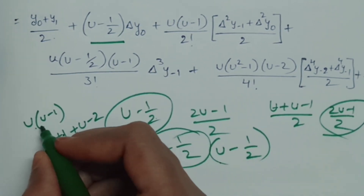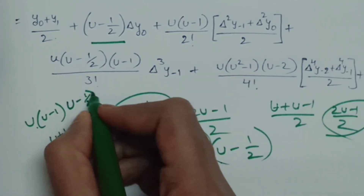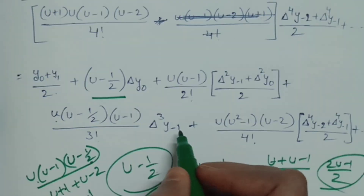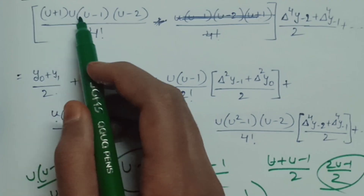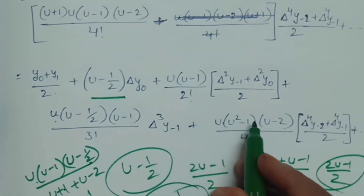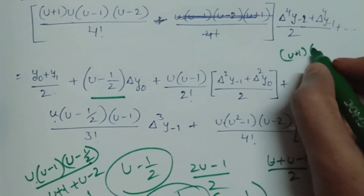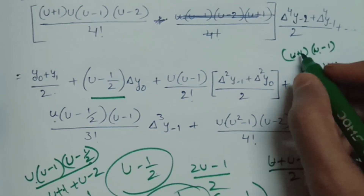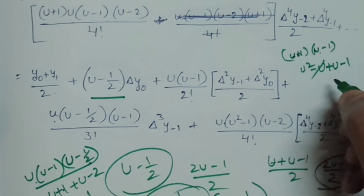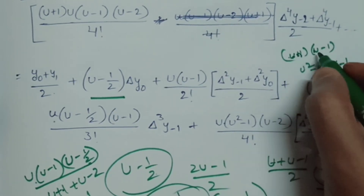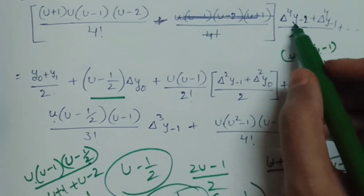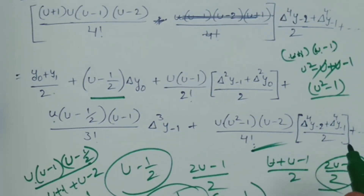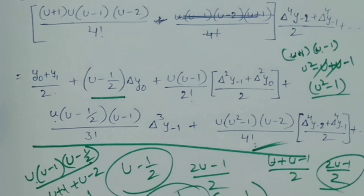Okay, so finally: u(u minus 1) — we rename this as (u minus 1/2) — so we write u(u minus 1)/2 into (u minus 1)/3! delta cubed y minus 1. Substituting: u(u minus 2), u(u plus 1)(u minus 1) gives u squared minus 1, so (u plus 1)(u minus 1) equals u squared minus 1. Therefore (u squared minus 1)/4! times the remaining delta to the 4th y minus 2 plus delta to the 4th y minus 1, divided by 2.